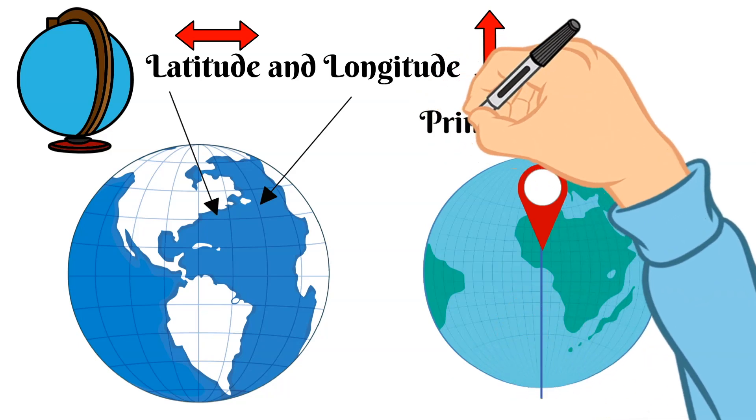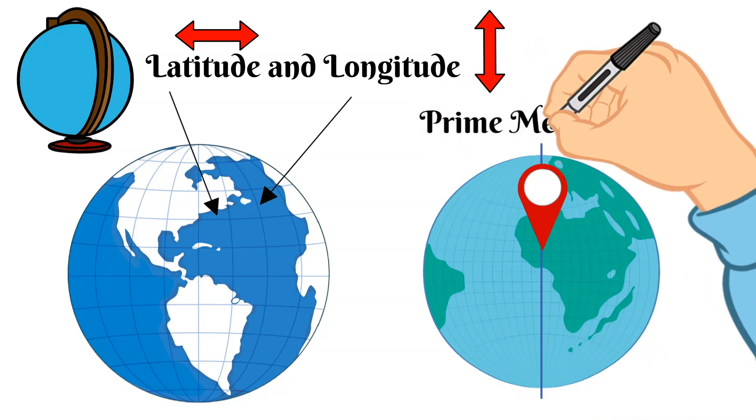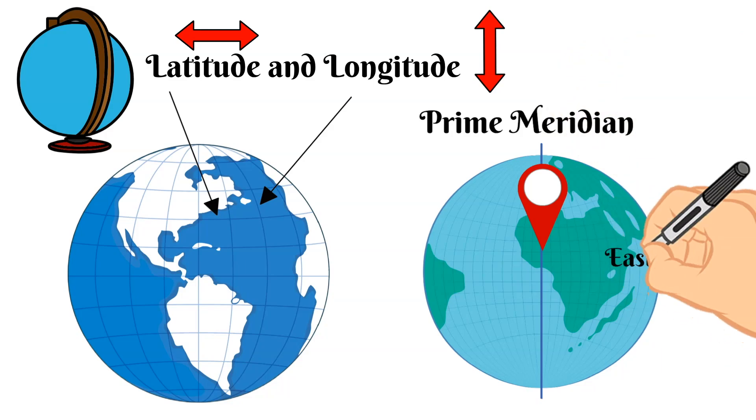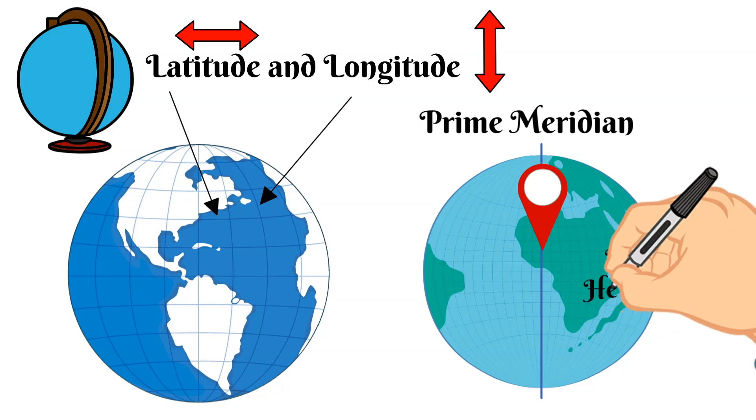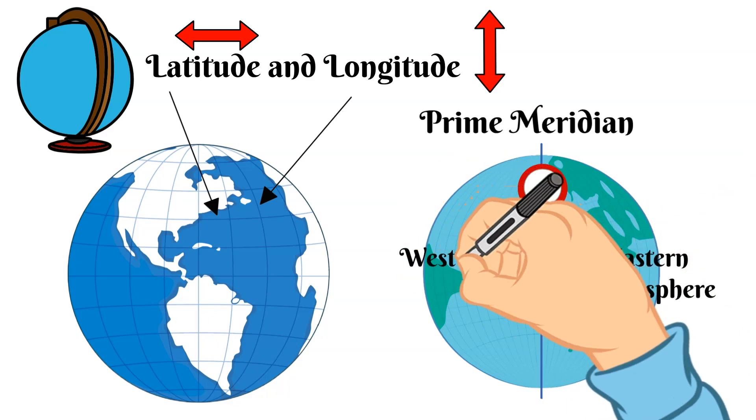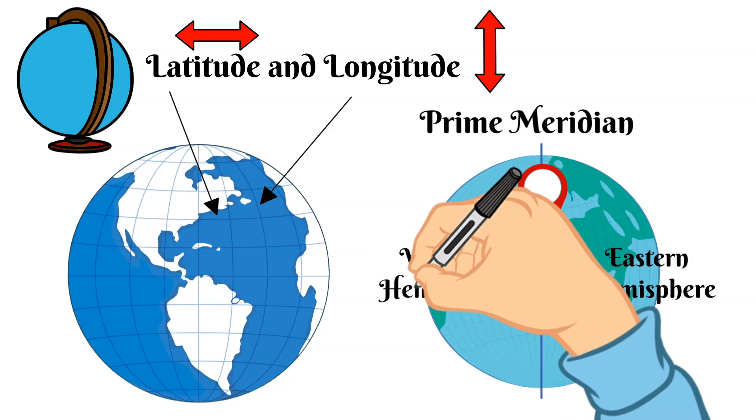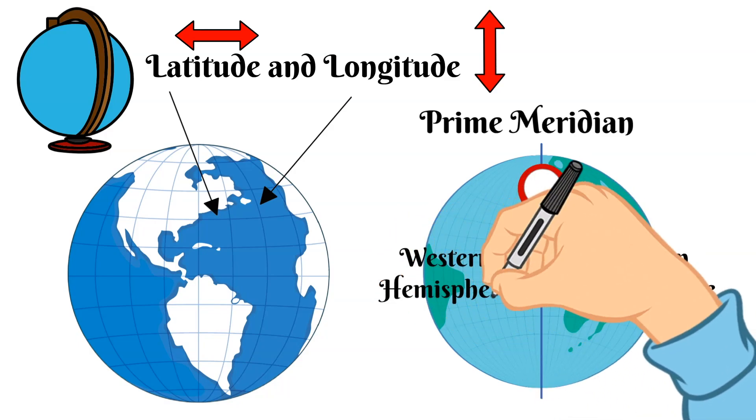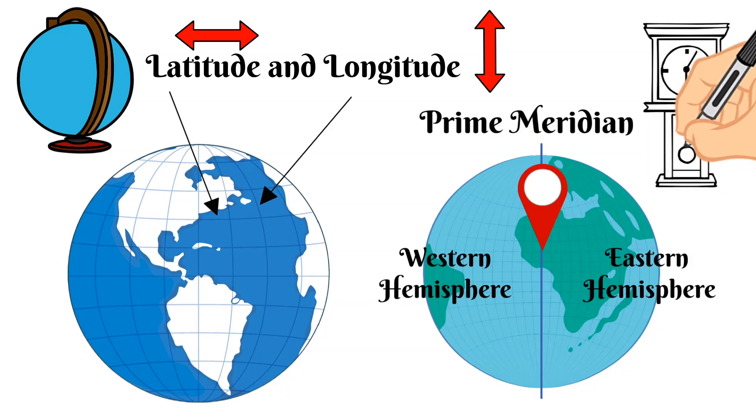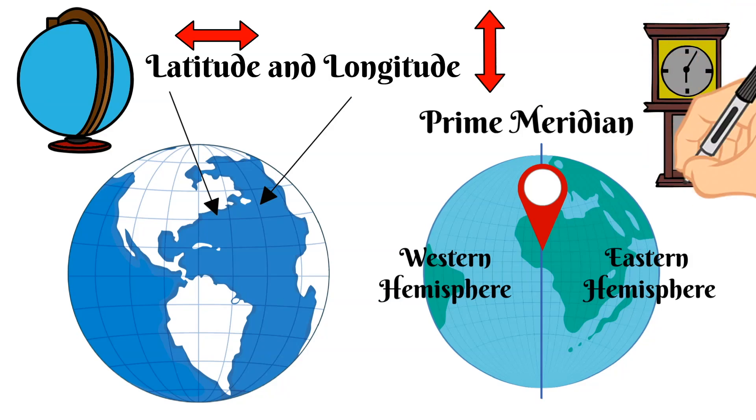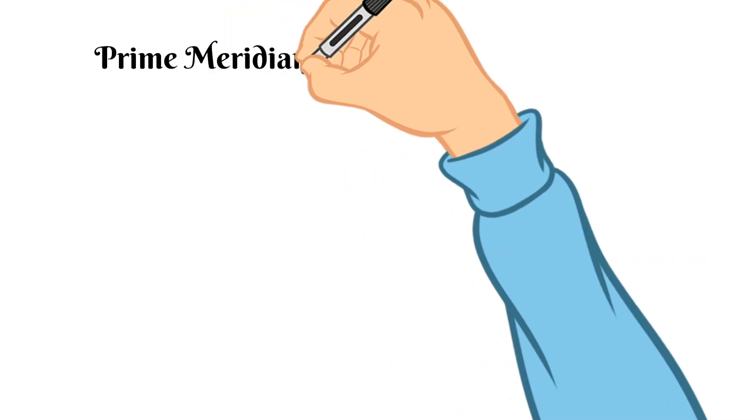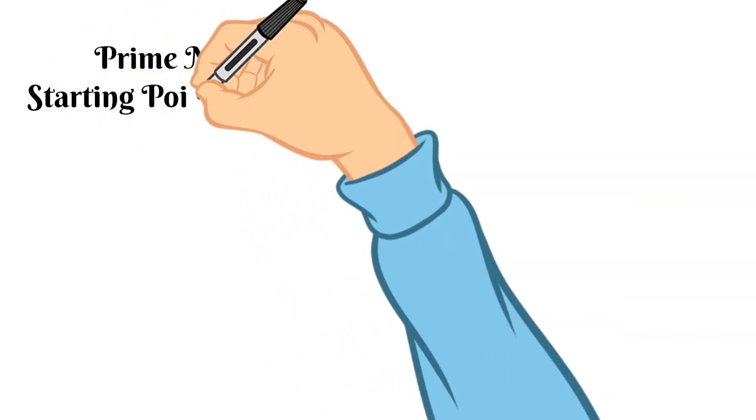Next up to talk about is the prime meridian and the prime meridian is an imaginary line that divides the earth into two equal parts long ways. There's the eastern hemisphere and the western hemisphere. The prime meridian is also the basis for the world's time zones as well as the starting point for measuring that longitude system that we talked about.